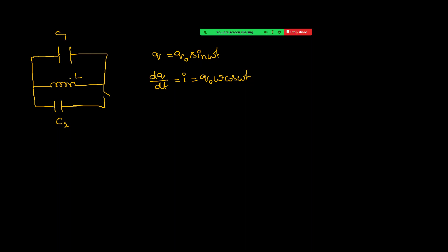What is the maximum charge? Since we are asking for maximum charge, initially energy was only in the inductor as magnetic potential energy. When this magnetic potential energy completely converts into electric potential energy — completely given to the capacitors — then charge will be maximum. So I am using energy conservation. Initially energy was in the form of magnetic potential energy: half L I0 squared. This energy completely converts into electric potential energy.